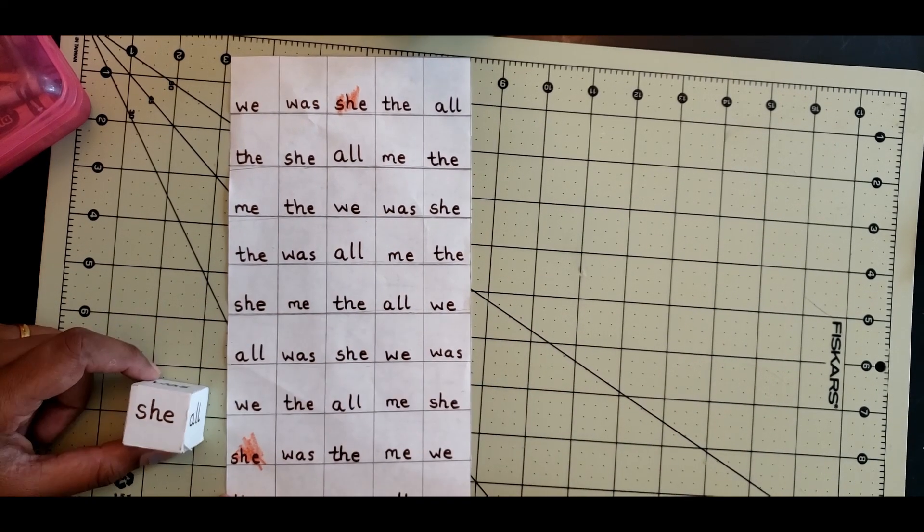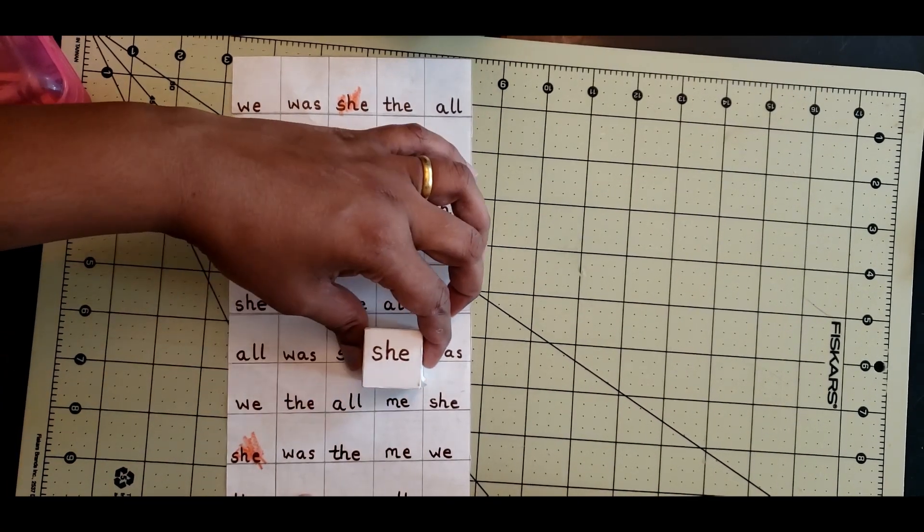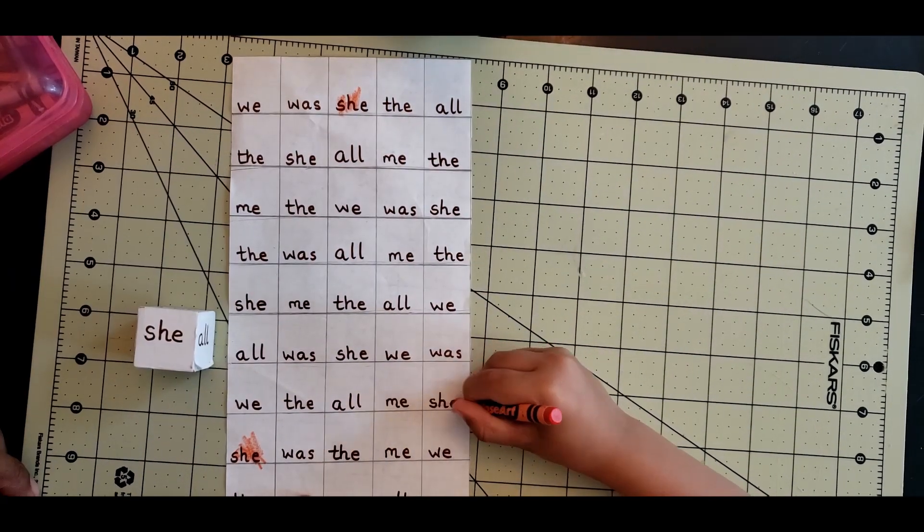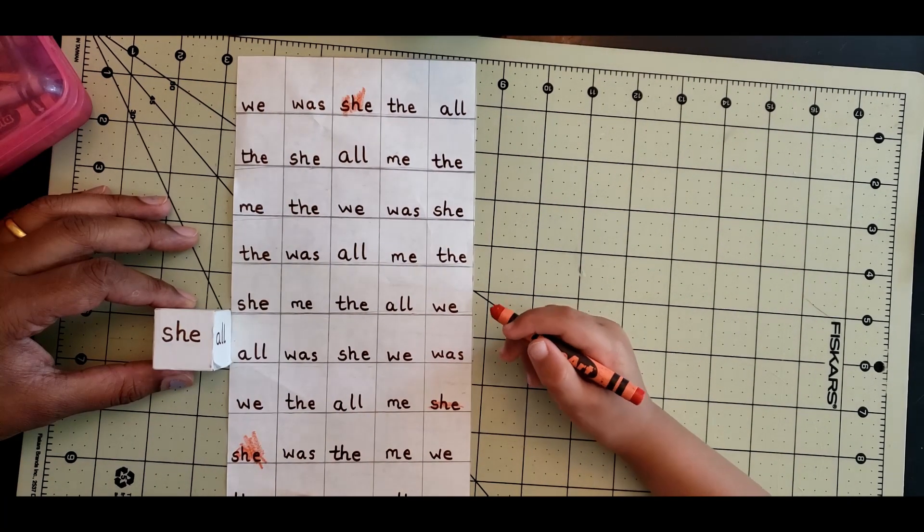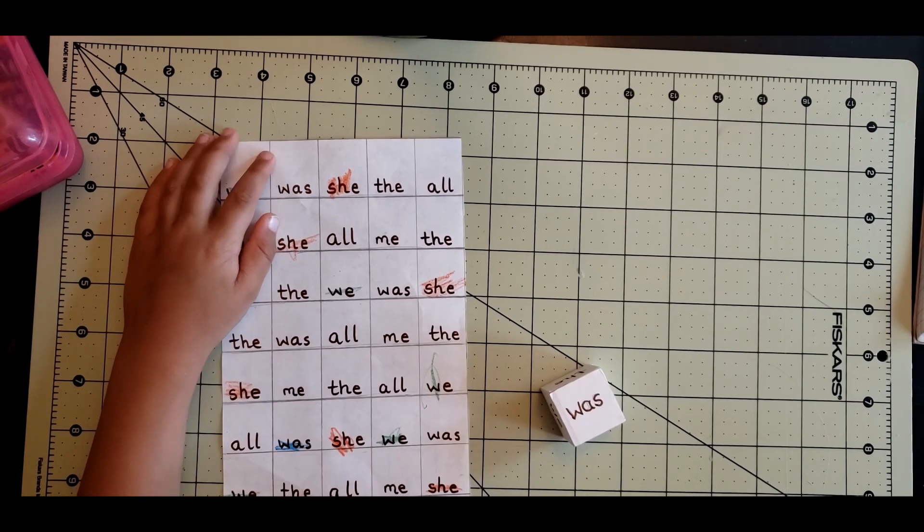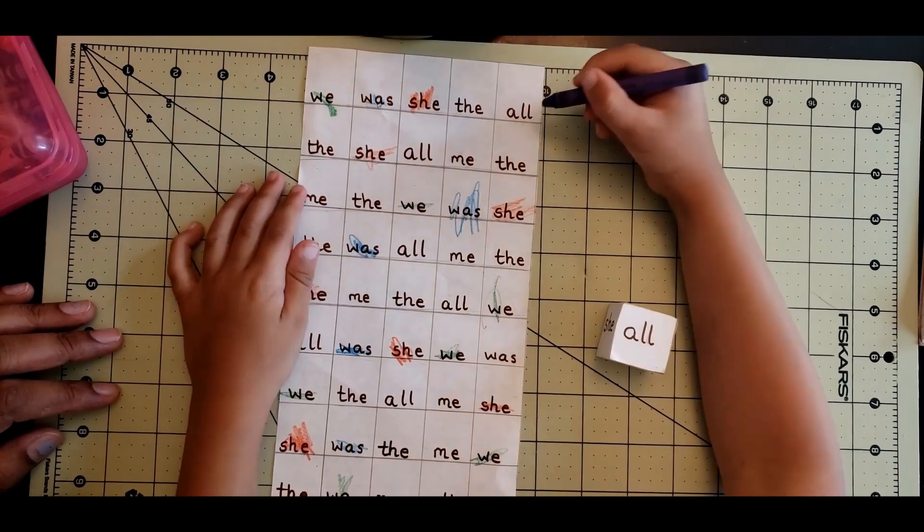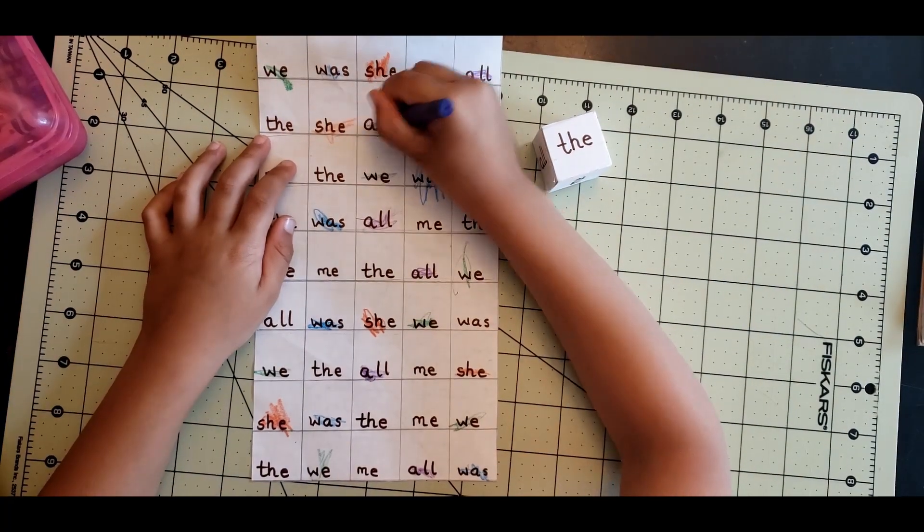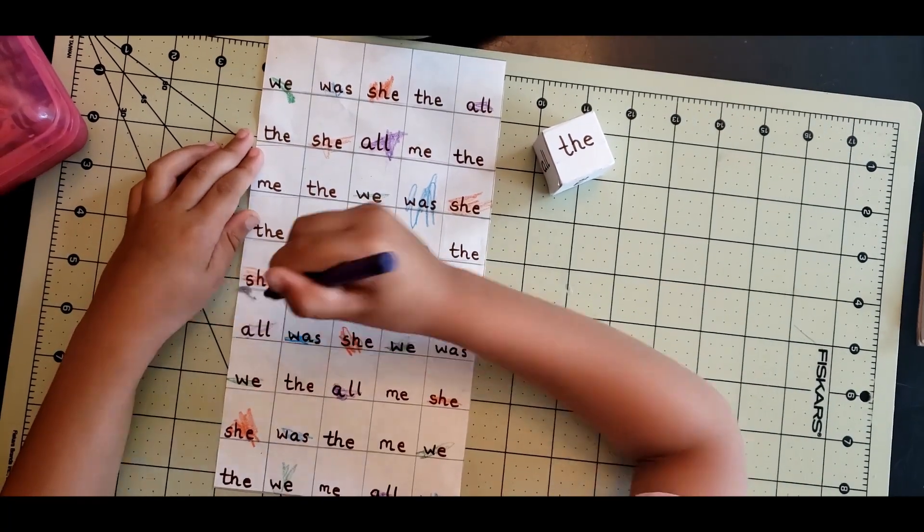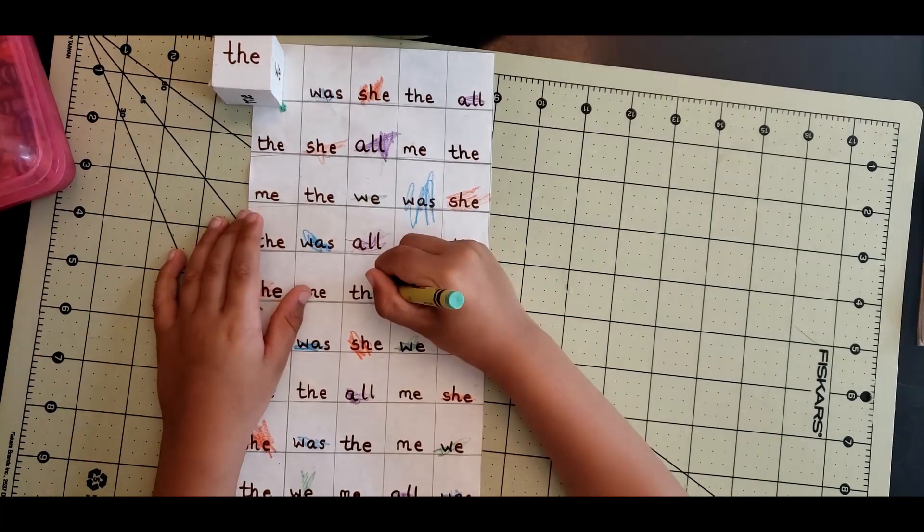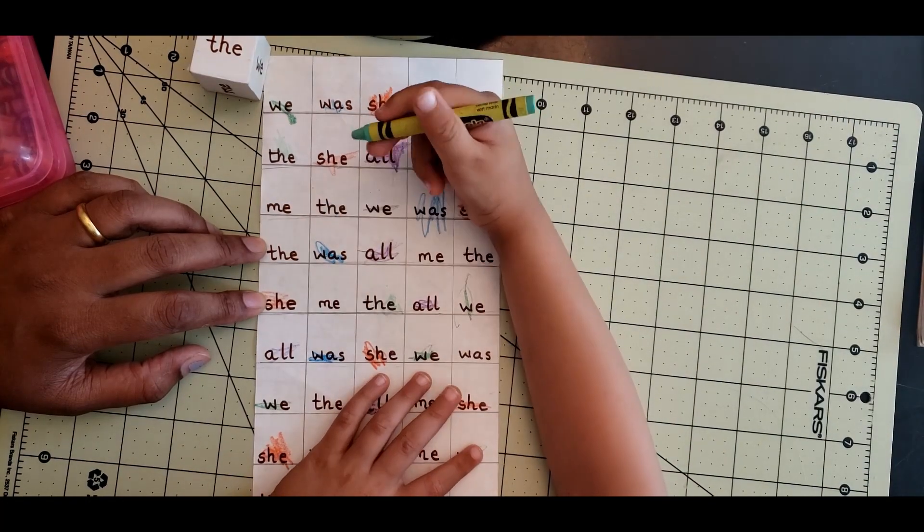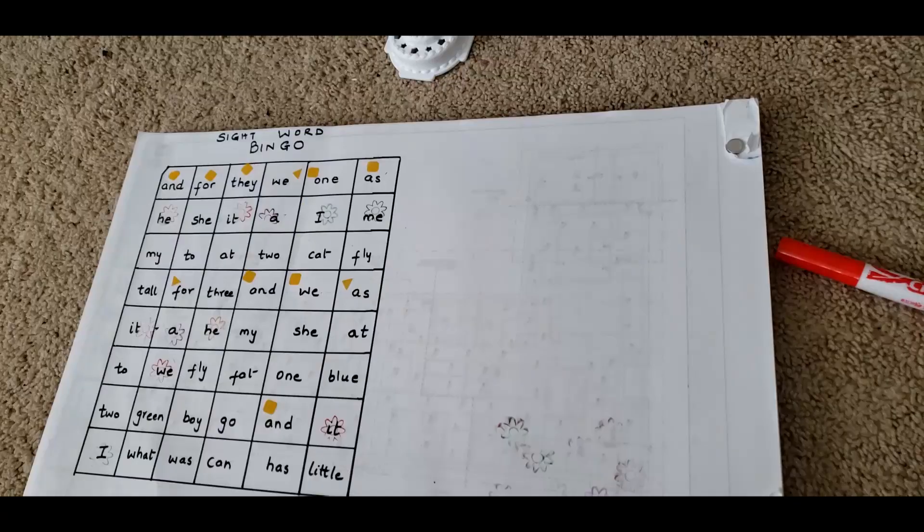Initially your child might have difficulty like he had—he couldn't find the word 'she.' What I did is I took the dice and went to each column and scrolled around to see if he could match the actual words to the word being asked. He was able to do it later. Then we do it for other words like 'the,' 'all,' 'we,' and finish up all the words.